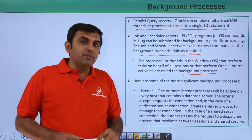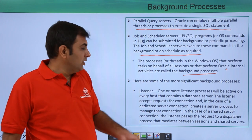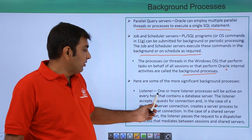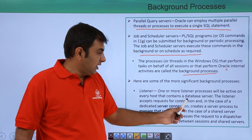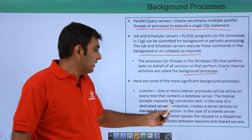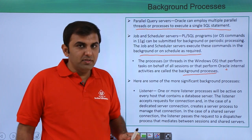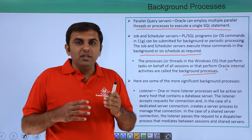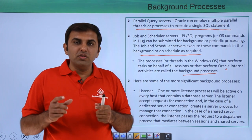Let us discuss Oracle database background processes. First is the listener. One or more listener processes will be active on every host that contains a database server. The listener accepts requests for connections and, in the case of a dedicated connection, creates the server process and manages that connection. Whenever the client sends a request in a dedicated environment, one server process will be created.